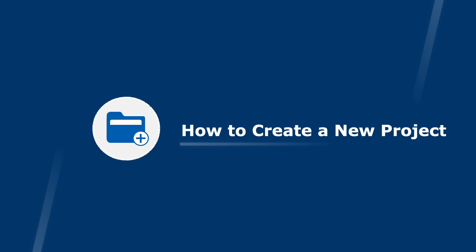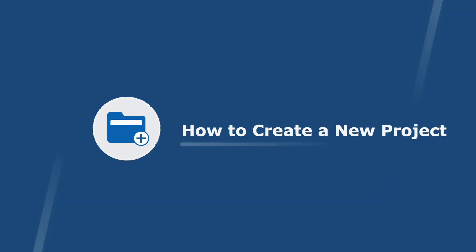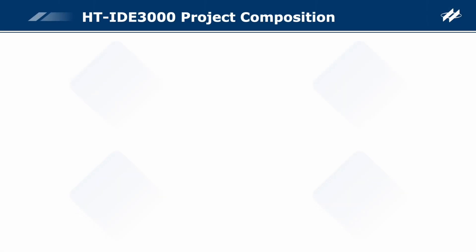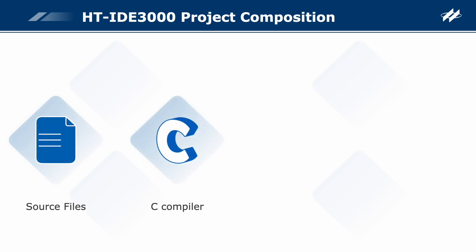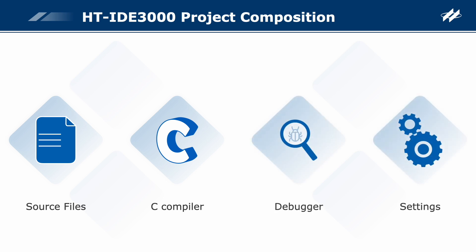How to create a new project: Developing an application program in the HT-IDE 3000 starts with creating a project. A project includes the application program location and file name, compiler version selection, compiler settings, optimization parameters, debug required settings, and other settings.